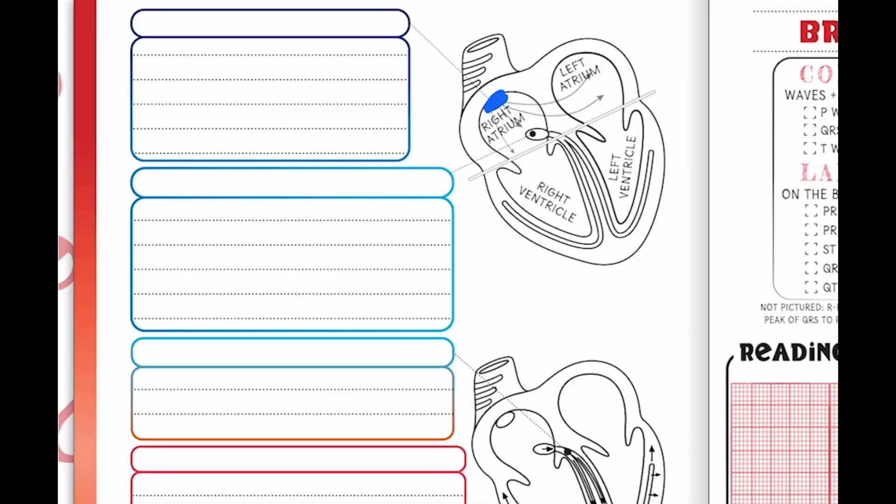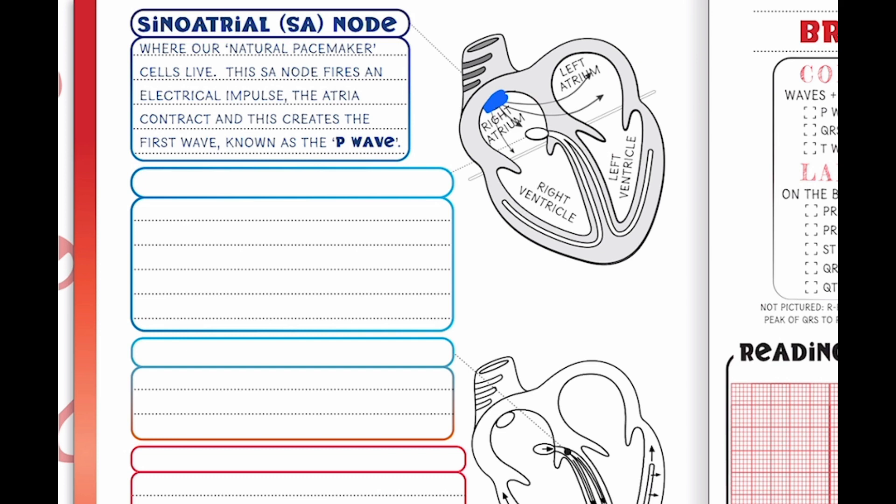So what makes this heart initially beat and squeeze? Well the answer to that is going to be electricity. Little node right here that sits up at the top of the right atrium called the sinoatrial node or commonly called and recognized as the SA node. This SA node is known as our heart's natural pacemaker because the cells that live in it generate electrical impulses that initiate each heartbeat and control that heart rate. These impulses cause our atria to contract that pushes blood into our ventricles, and this contraction becomes the first wave that we're gonna see on our EKG paper.